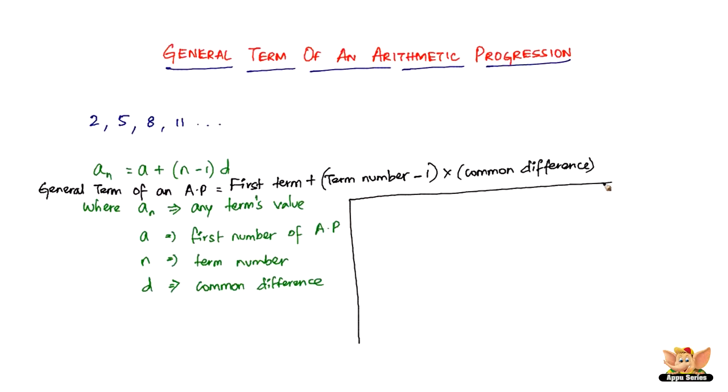So let me take a quick example. Say, for example, we've got 4, 9, 14, 19, 24, 29, and so on. Say, for example, you want to find the 10th term of this.